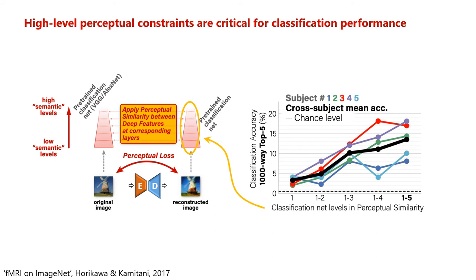The high classification accuracy is greatly attributed to the introduction of the perceptual similarity metric, which involves low to high-level features. We found that limiting the perceptual similarity to lower-level features only dramatically decreases the classification performance, whereas including high-level constraints is critical for high classification accuracy.